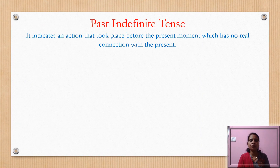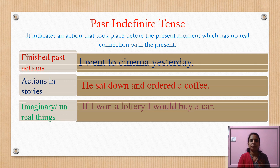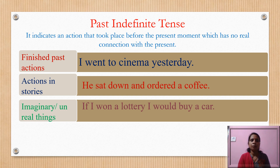Let's start with the first tense — past indefinite tense. It indicates an action that took place before the present moment which has no real connection with the present. Here are some examples. First: finished past actions. For example, 'I went to cinema yesterday.' The word 'yesterday' is an adverbial clause of time.